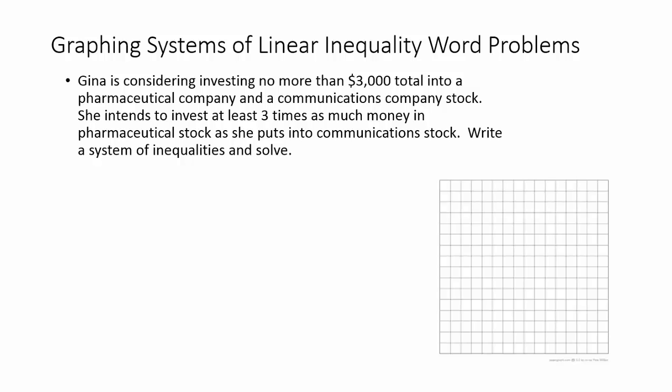Gina is considering investing no more than $3,000 total into a pharmaceutical company and a communications company stock. She intends to invest at least three times as much money in the pharmaceutical stock as she puts into the communications stock. Write a system of inequalities and solve.